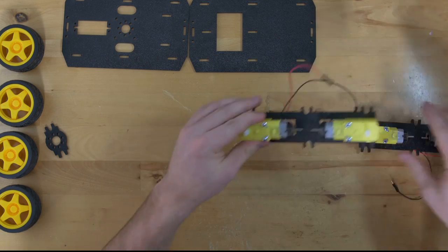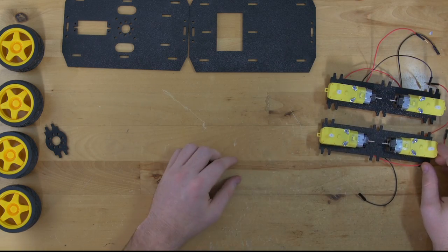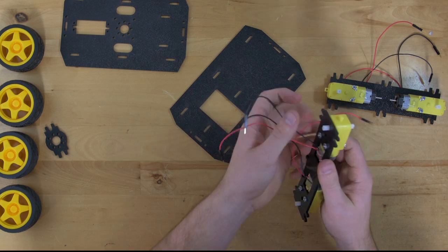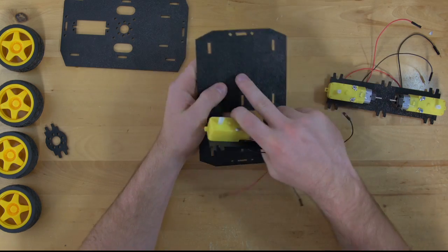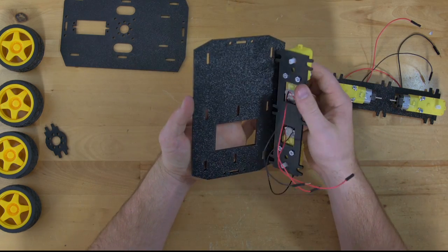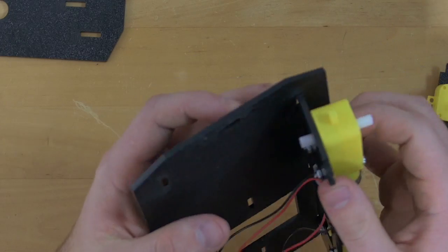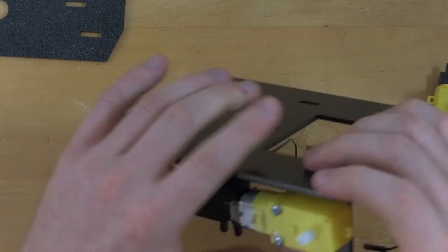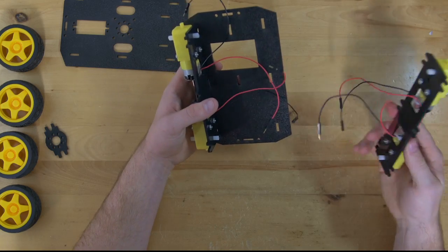But once you get your motors attached to your side plates, we're going to go ahead and snap these into the rough side of this bottom plate here. Snap these in and make sure that your motors are facing out towards the outside of the plate.